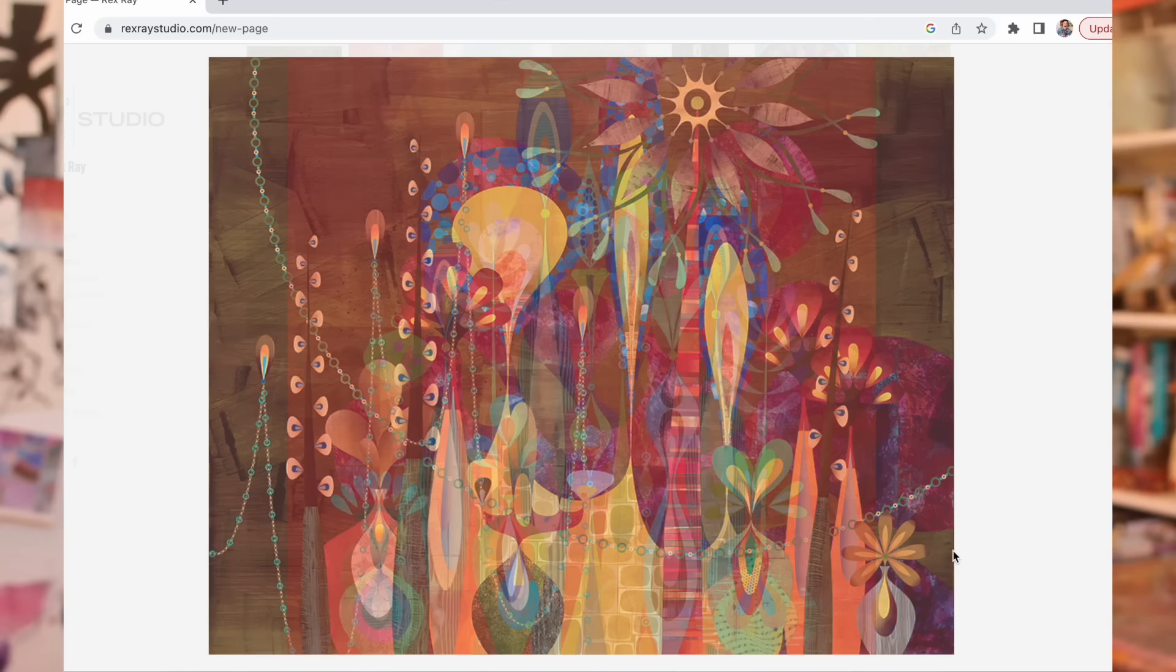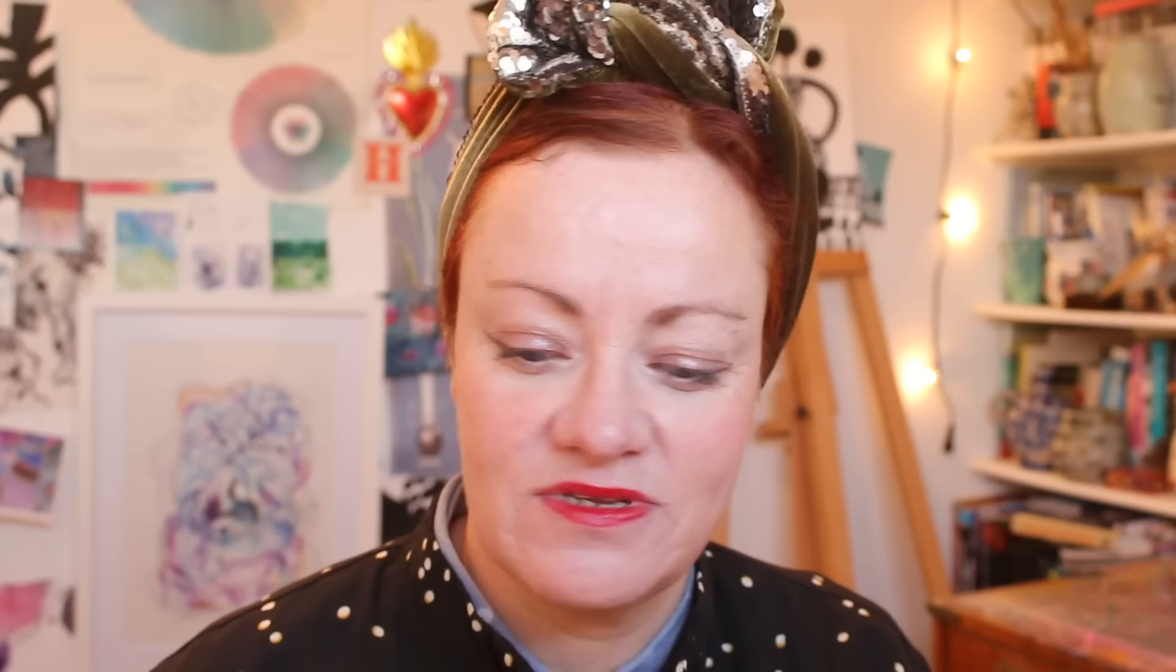So the second artist I wanted to show you is an artist called Hilma af Klimt. Now she was working a hundred years before Rex Ray. She's from Sweden and she was working in the early 1900s. Her work isn't that well known, but she's a contemporary of some of the very famous early abstract artists. So she was working at a similar time to Kandinsky, and she's creating these wonderfully large paintings where she is arranging organic shapes and lines on the pictorial plane.